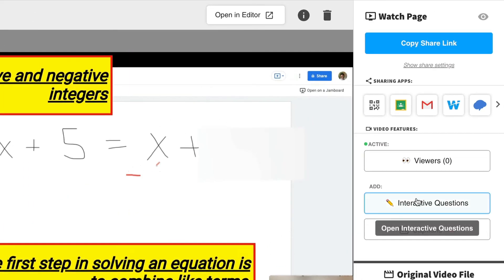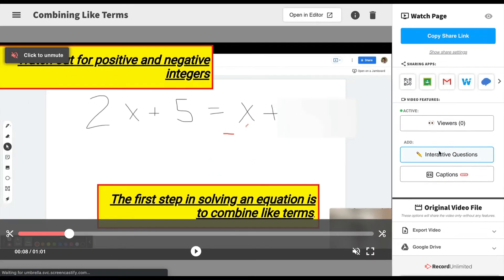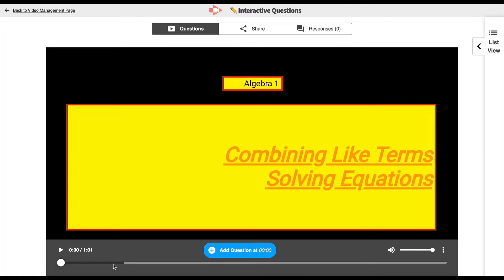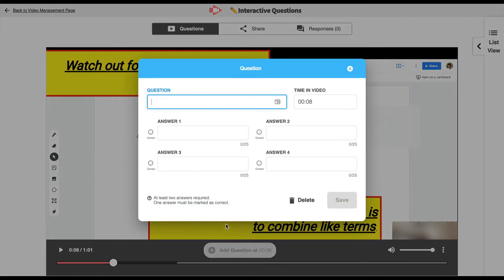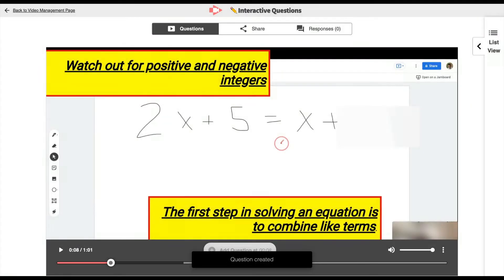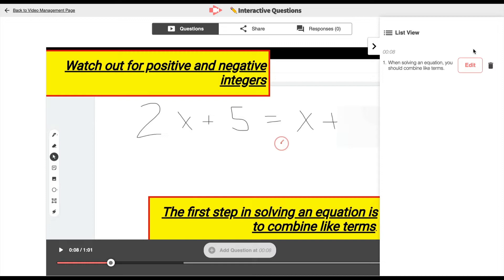First and foremost, you can add interactive questions to your video by selecting Interactive Questions on the right-hand panel. When you do that, you'll be able to move your cursor to a particular time in the video and add a multiple-choice question. The question can be whatever you'd like and you can have anywhere between two and four answer choices. You'll select the correct answer and then save it. You'll be able to view all of the questions that you've added to the video on the right side in the list view.